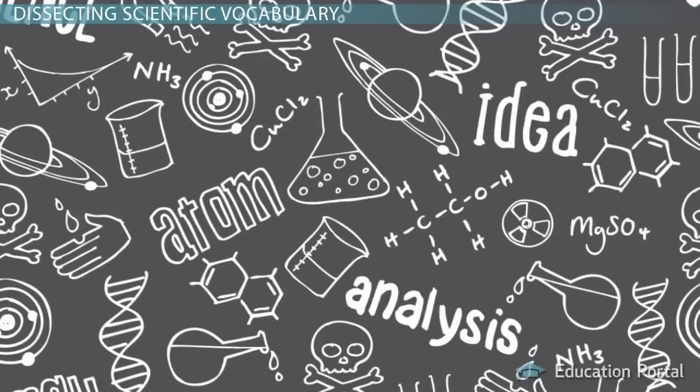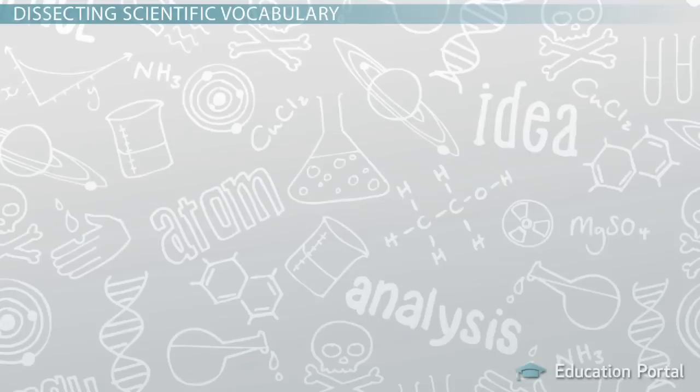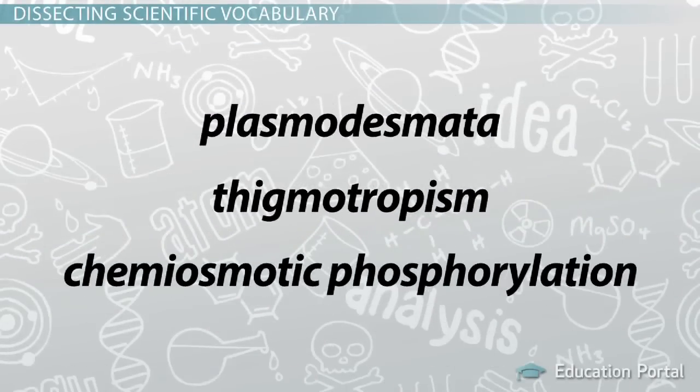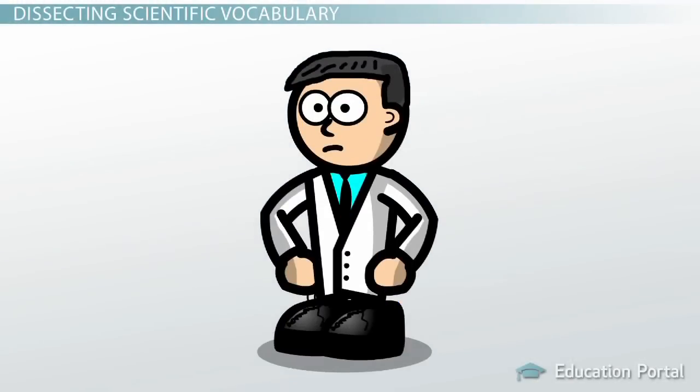One of the toughest challenges in science is understanding the long, strange vocabulary terms. Science textbooks are full of crazy words like plasmodesmata, thigmotropism, and chemiosmotic phosphorylation. It's really hard to learn science effectively when all these weird words are being thrown in your face. How did scientists come up with these words anyway? Why do they have to be so unfriendly?